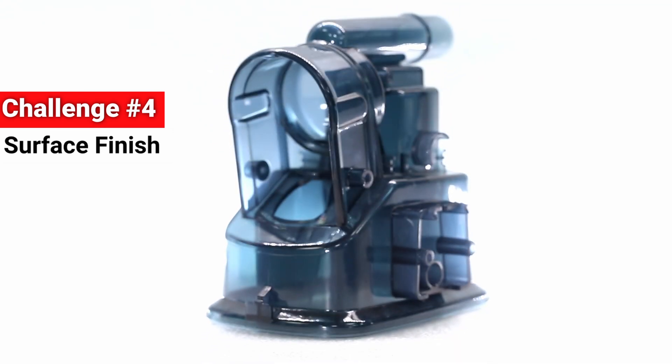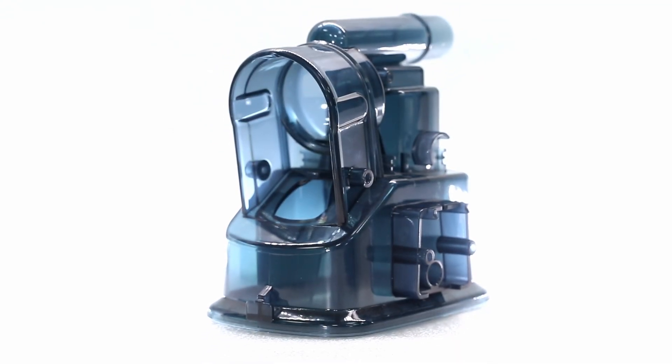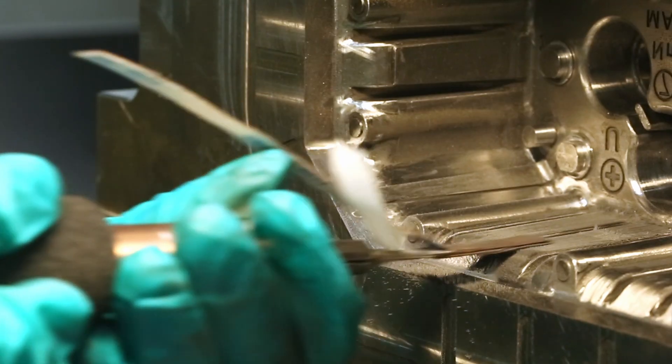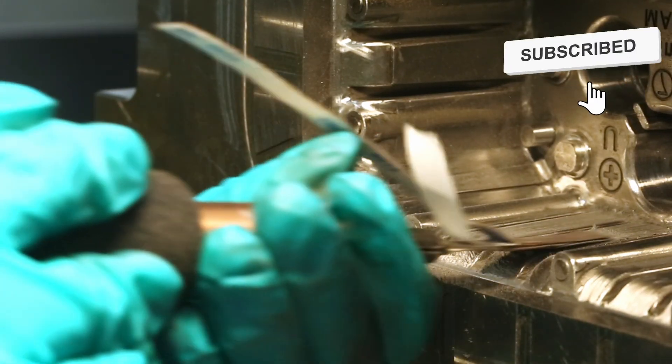Let's consider the surface finish. As you can see, most of this part has a smooth, glossy surface, which is measured to SPI A2. To get that surface, we have to polish the cavity of the mold tool.